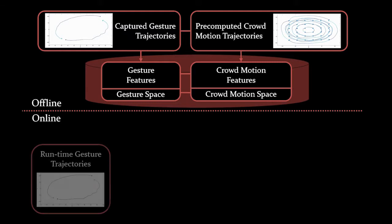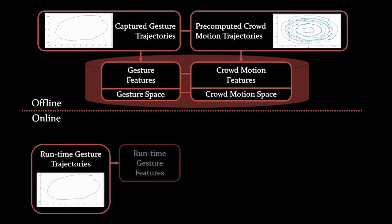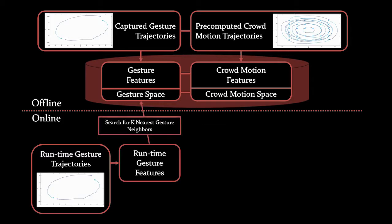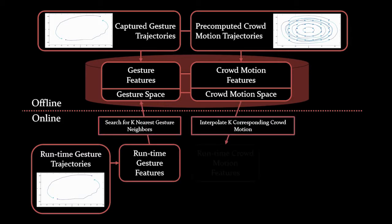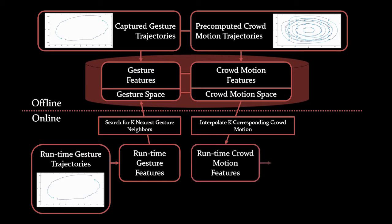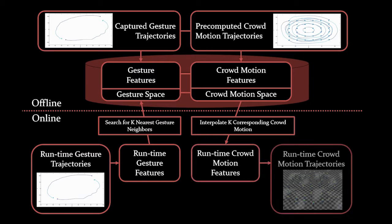During the online stage, given the runtime gesture trajectories, we evaluate corresponding gesture features. Within the database, we search for the k-nearest gestures and interpolate the k corresponding cloud motions. The resultant runtime cloud motion features are converted into runtime cloud motion trajectories, which are used to control a cloud.